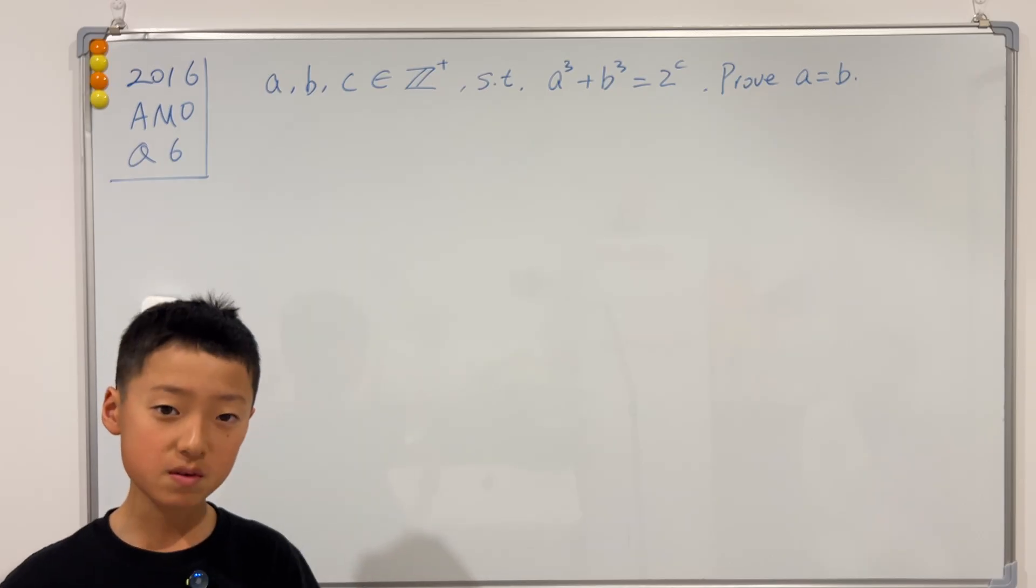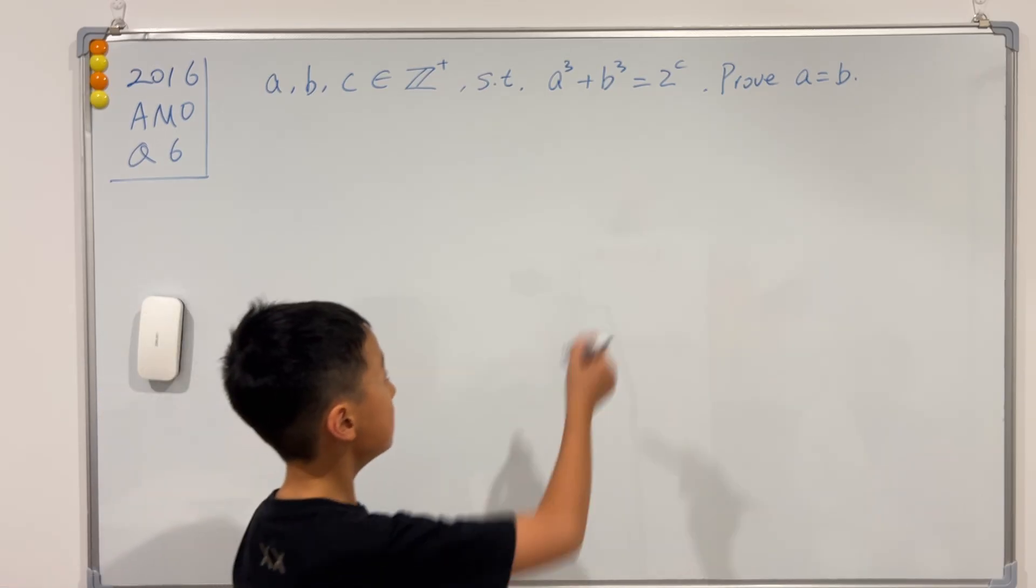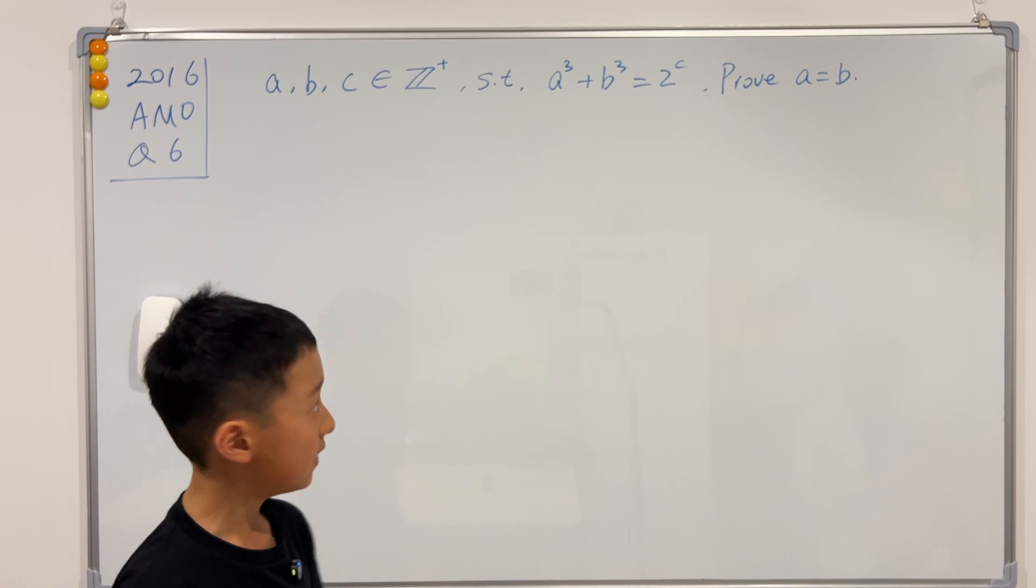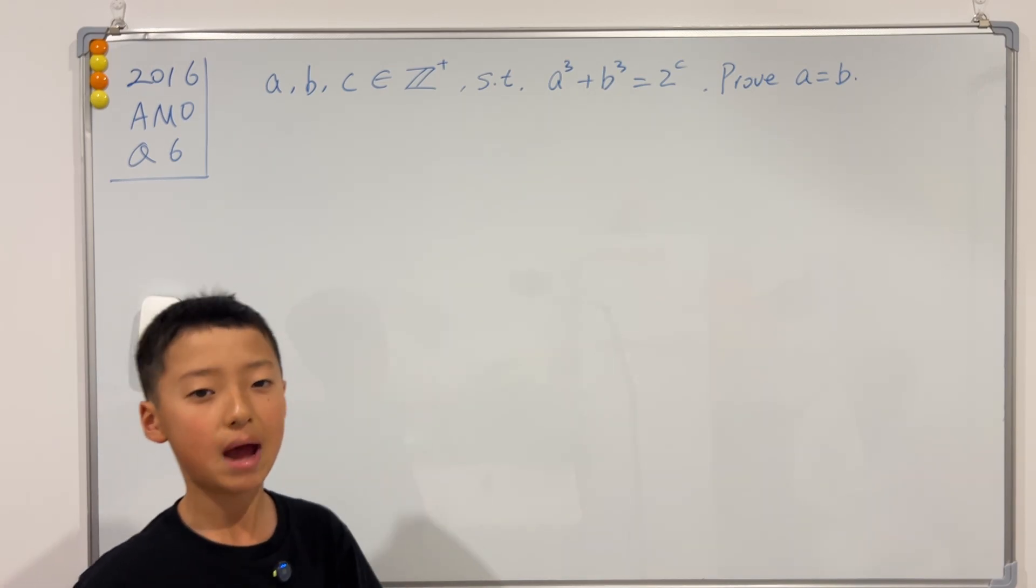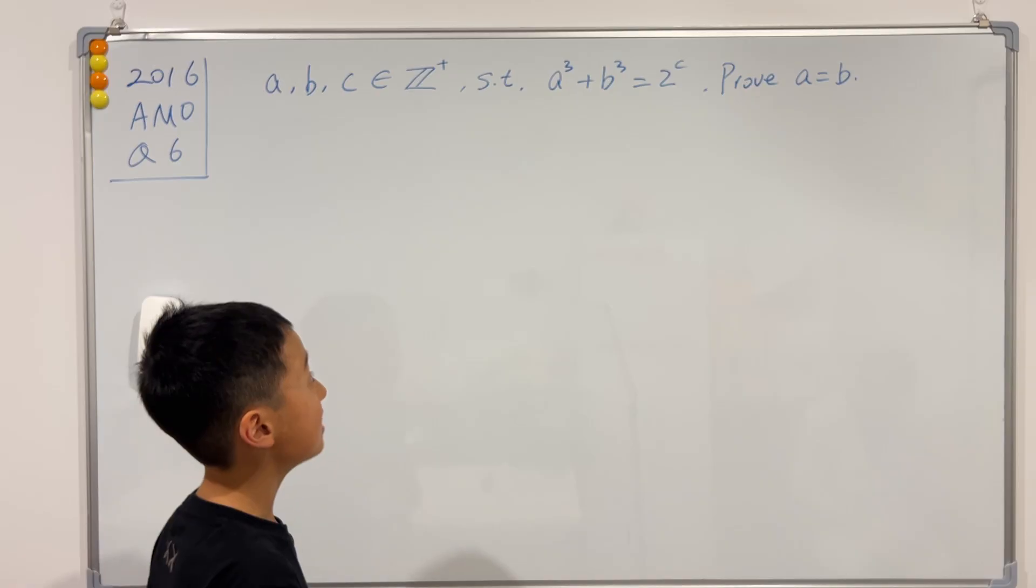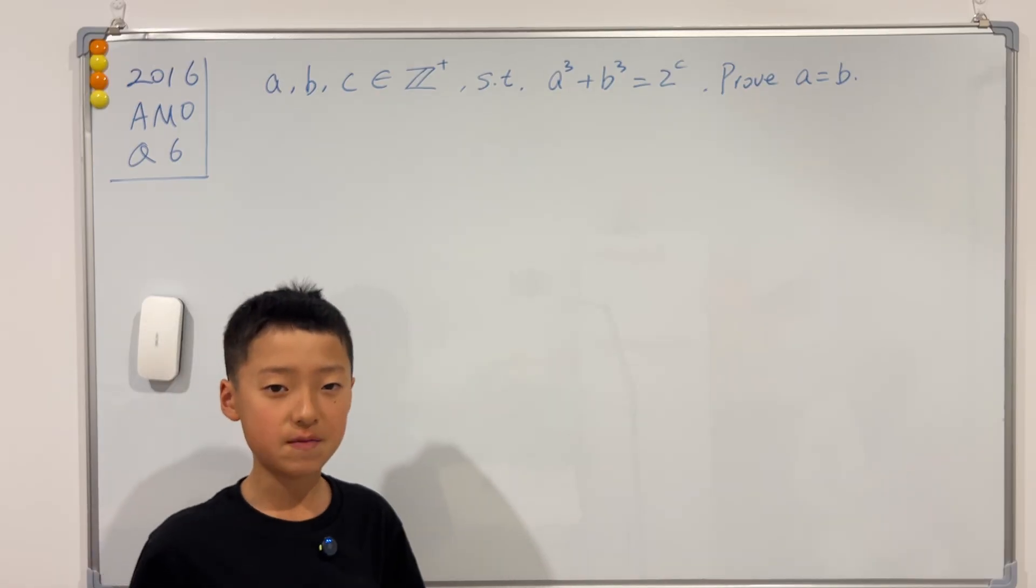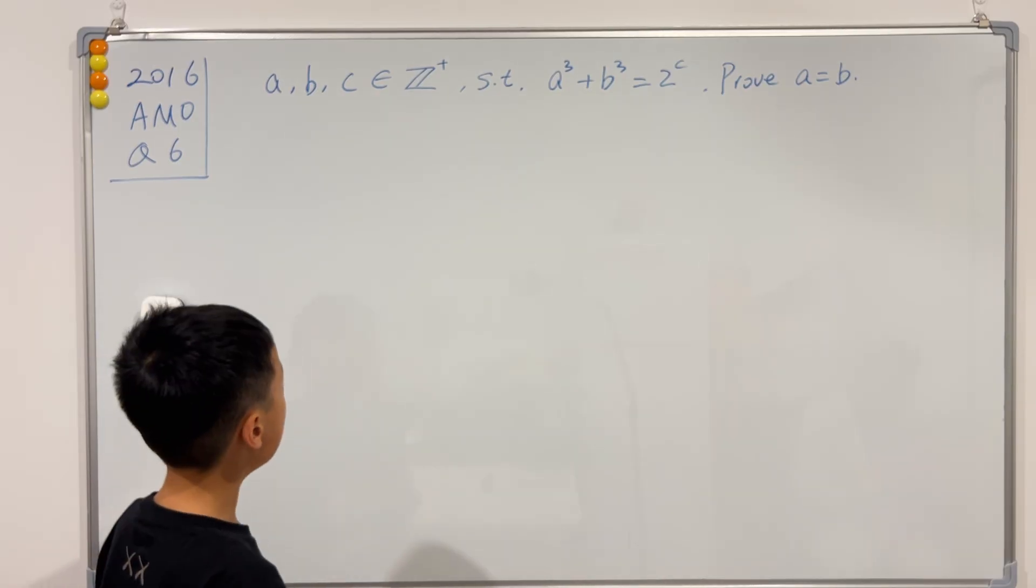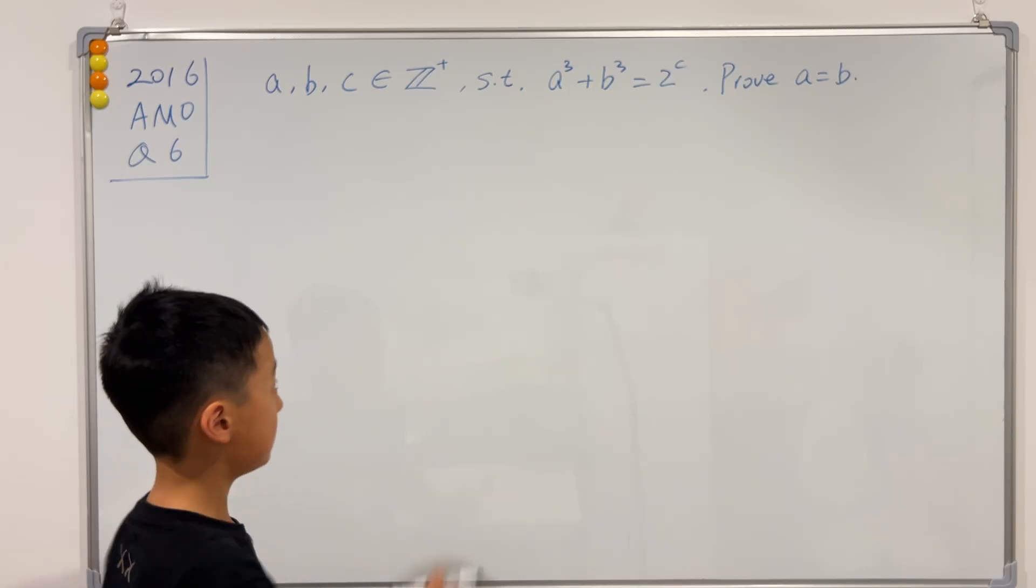If you watched my previous video, then you know that if the right hand side is even, then a and b must have the same parity, and that means that either a and b are both even or both odd. So we can split this into cases.